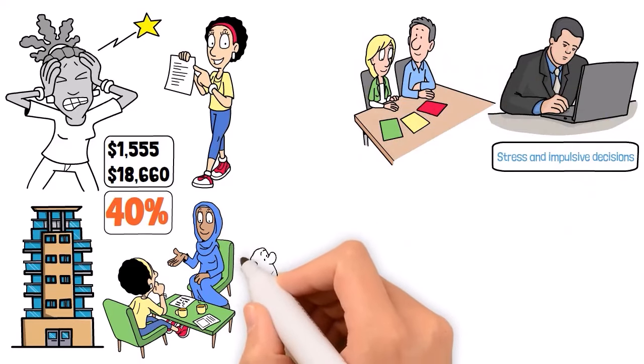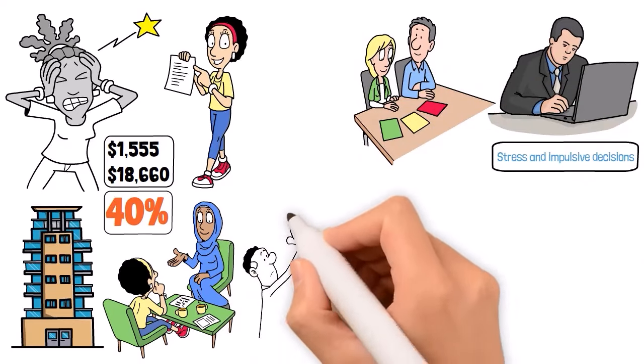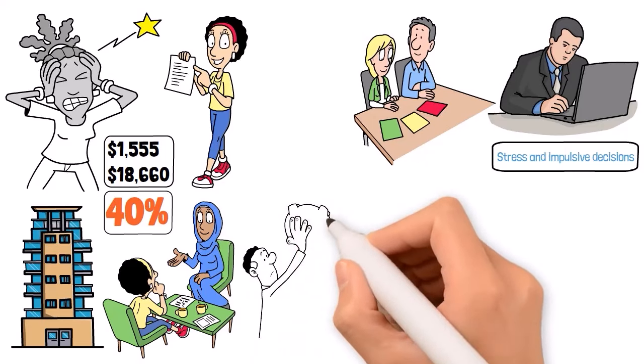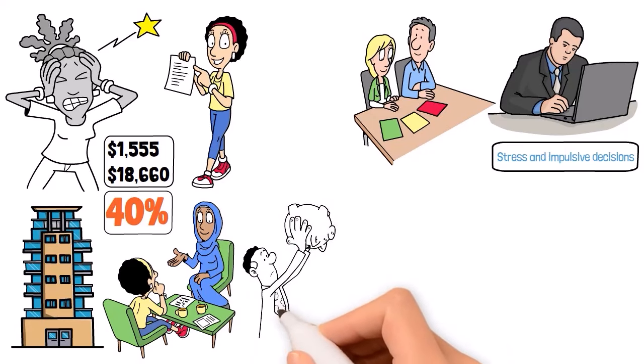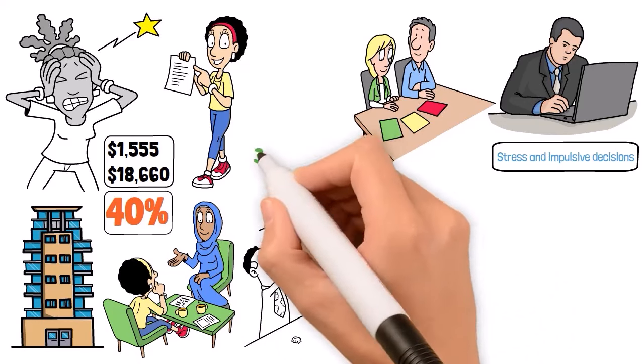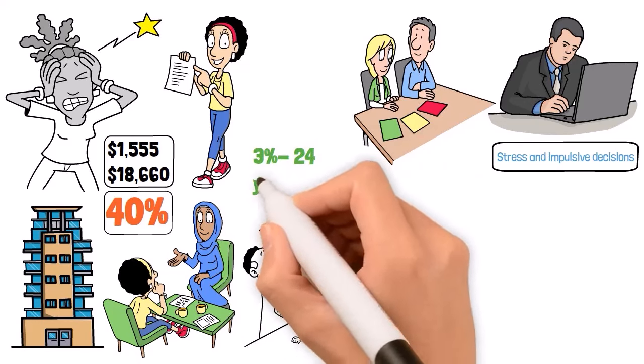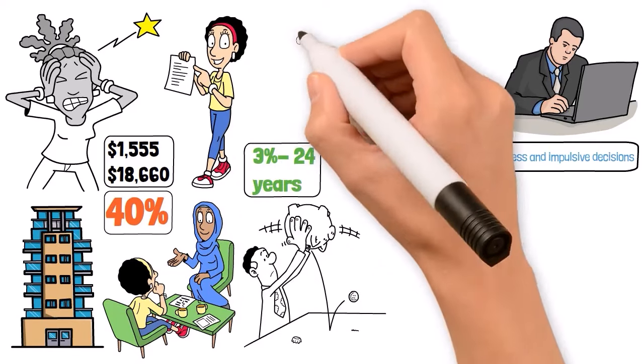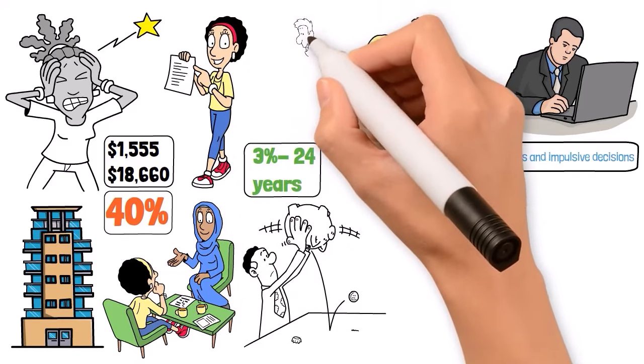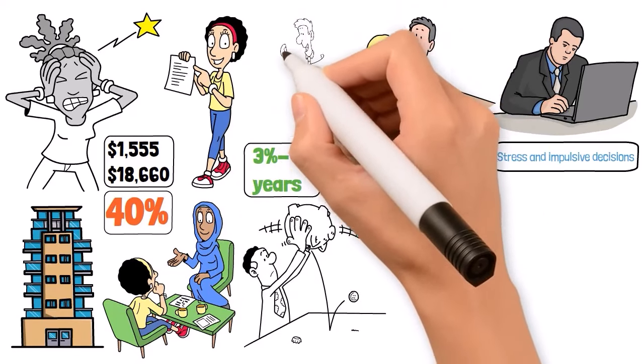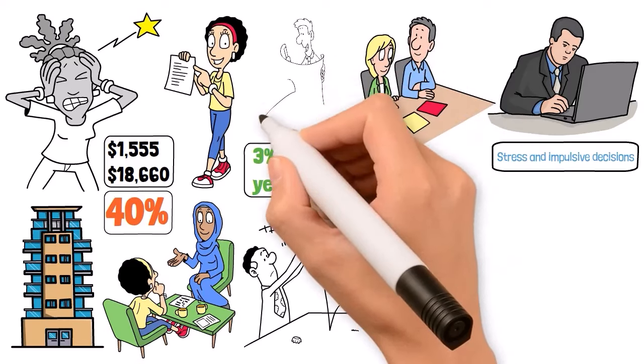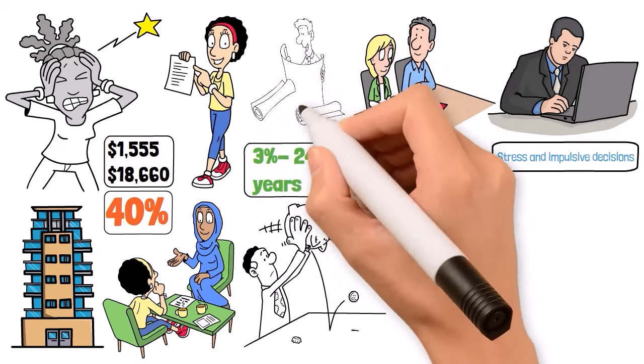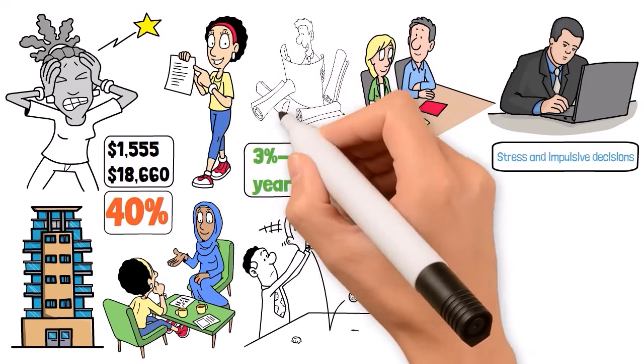Inflation can seriously devalue your savings over time. If you're not accounting for it, you might find your retirement fund doesn't go as far as you thought. With an average inflation rate of around 3%, your purchasing power could halve in about 24 years. Ignoring inflation in your retirement planning is like ignoring a leak in your financial boat. It might not sink you right away, but it's a problem that will only get bigger, so plan ahead.